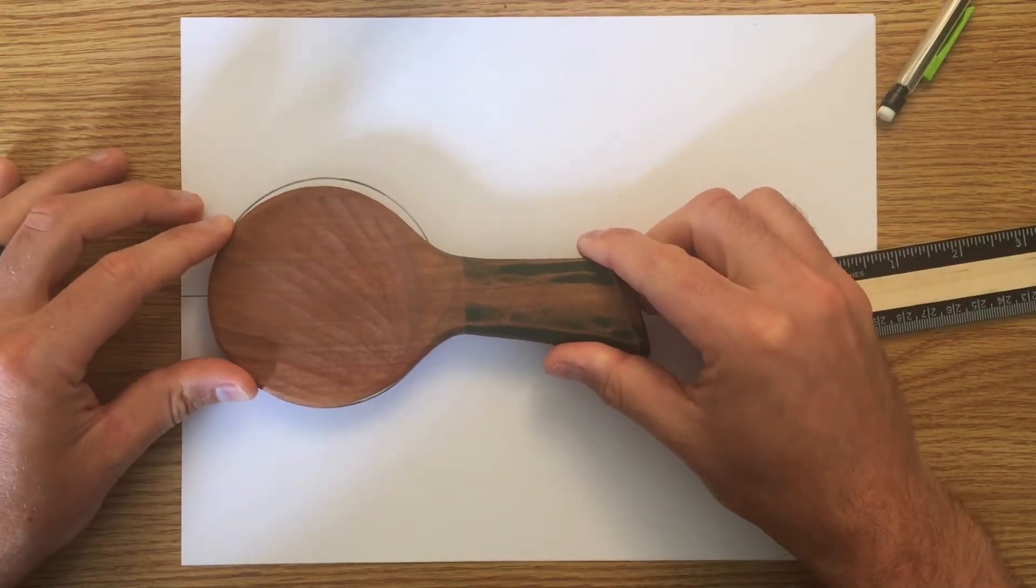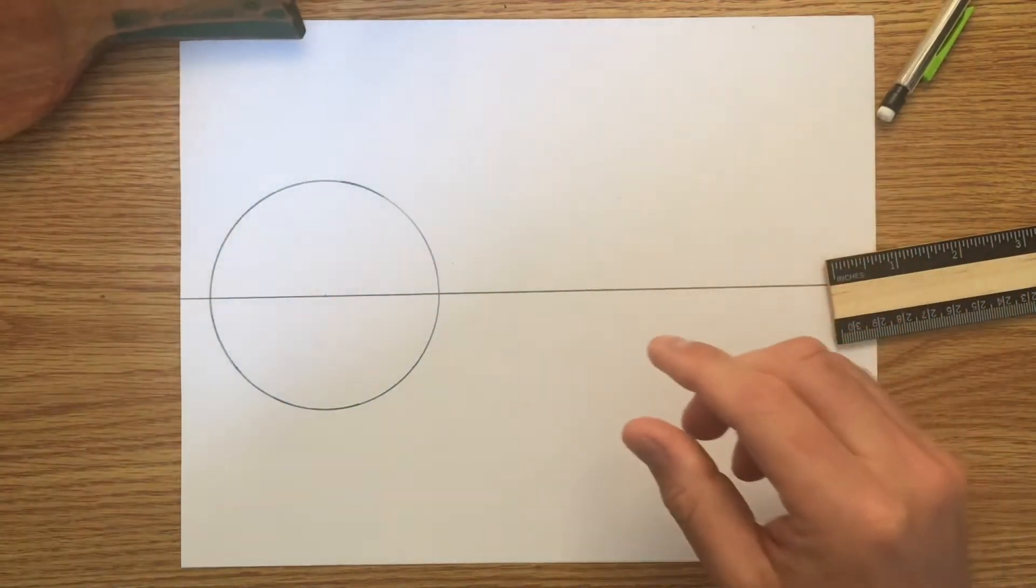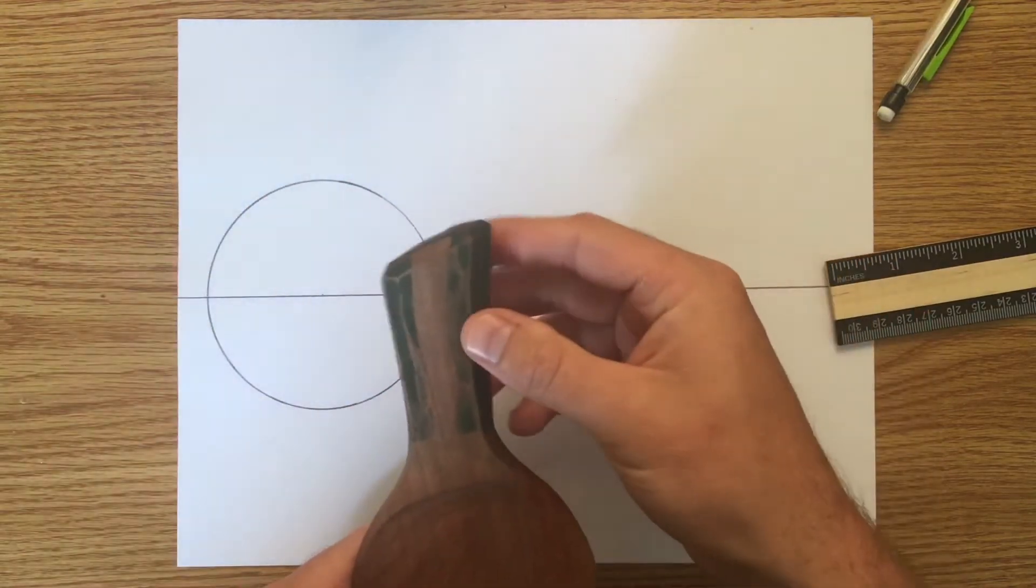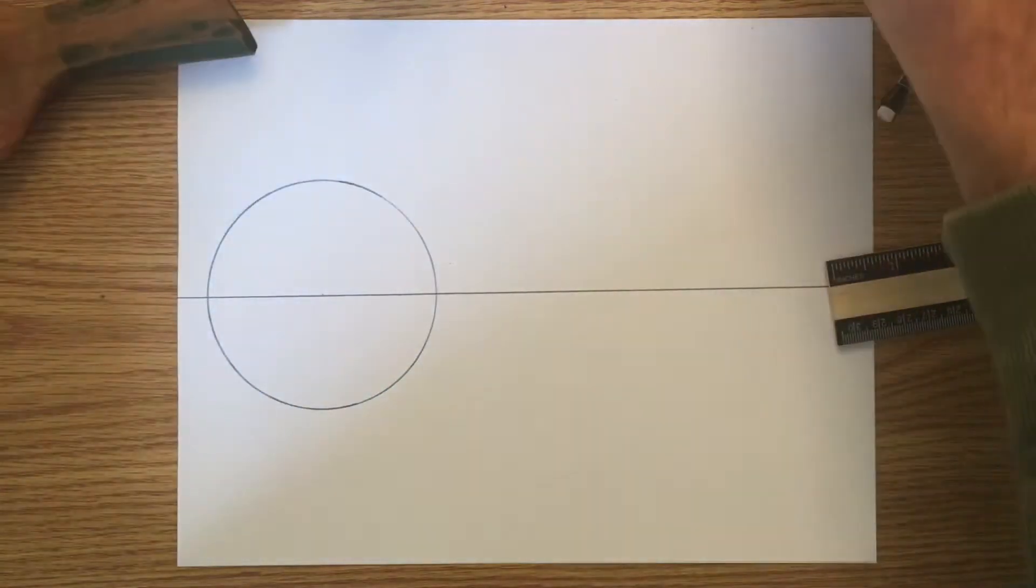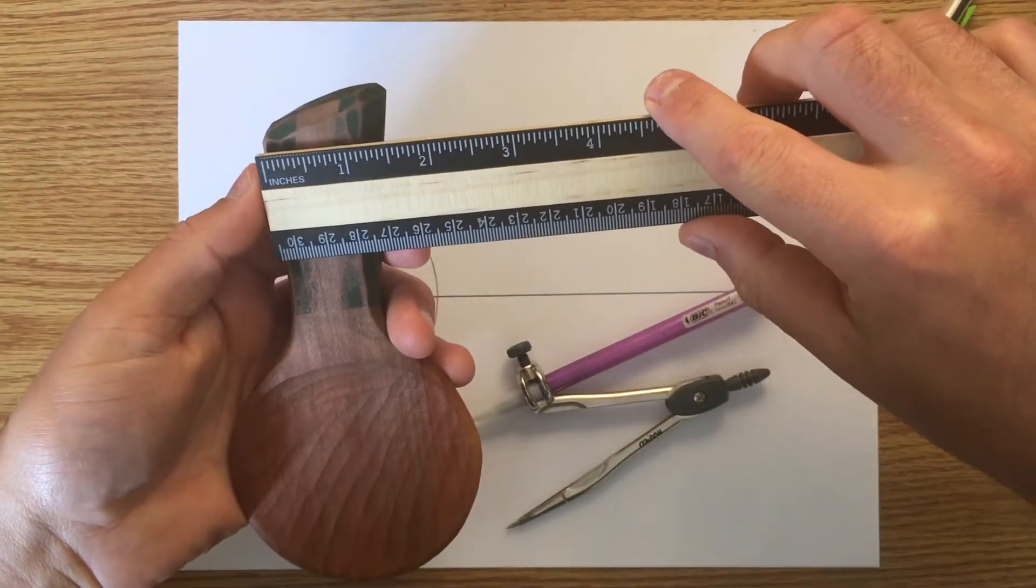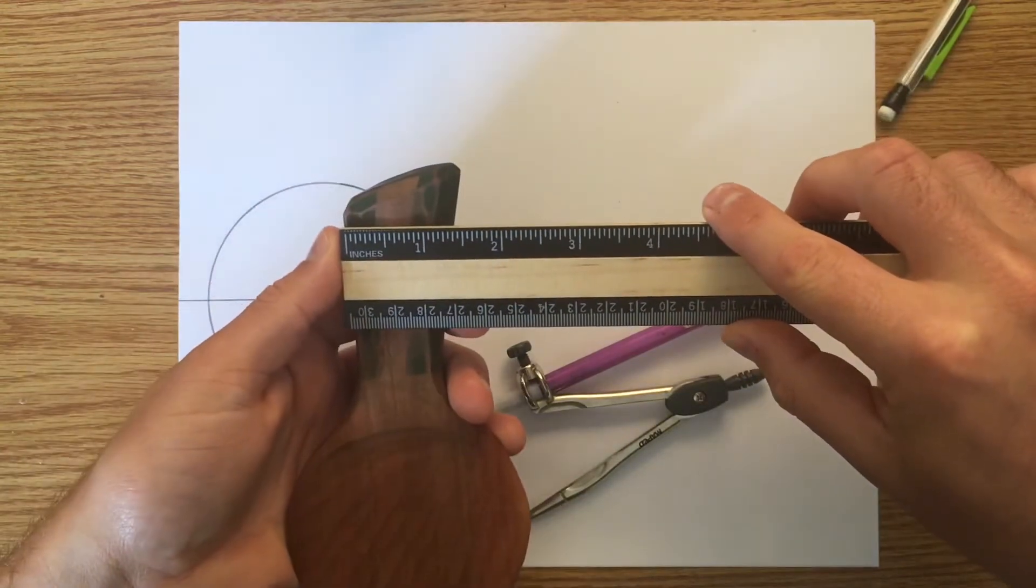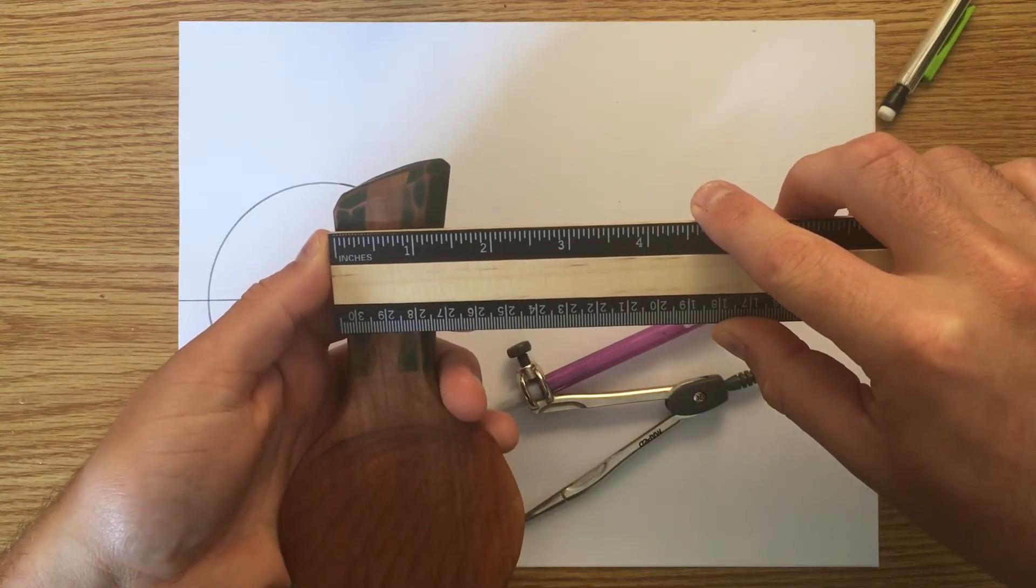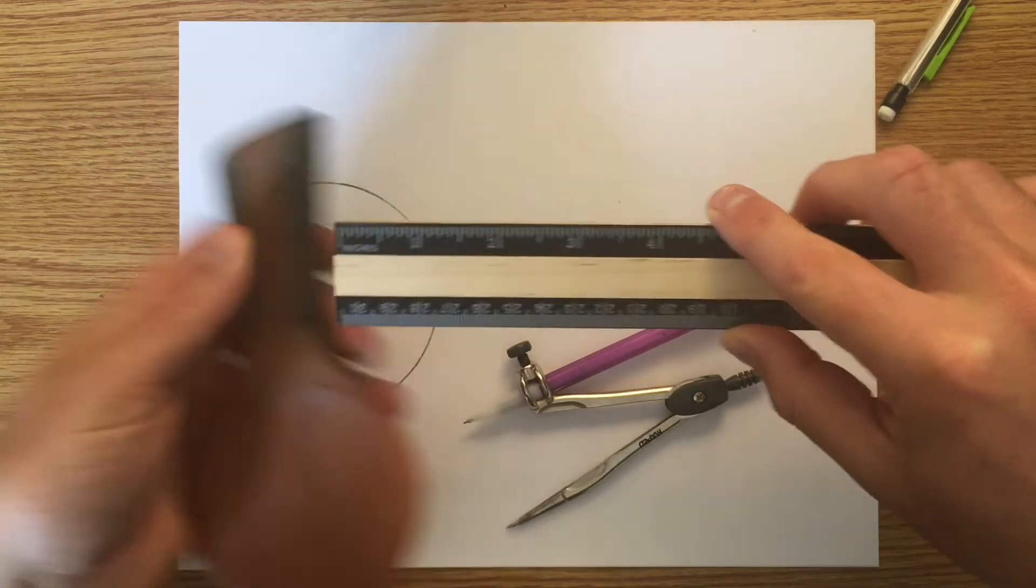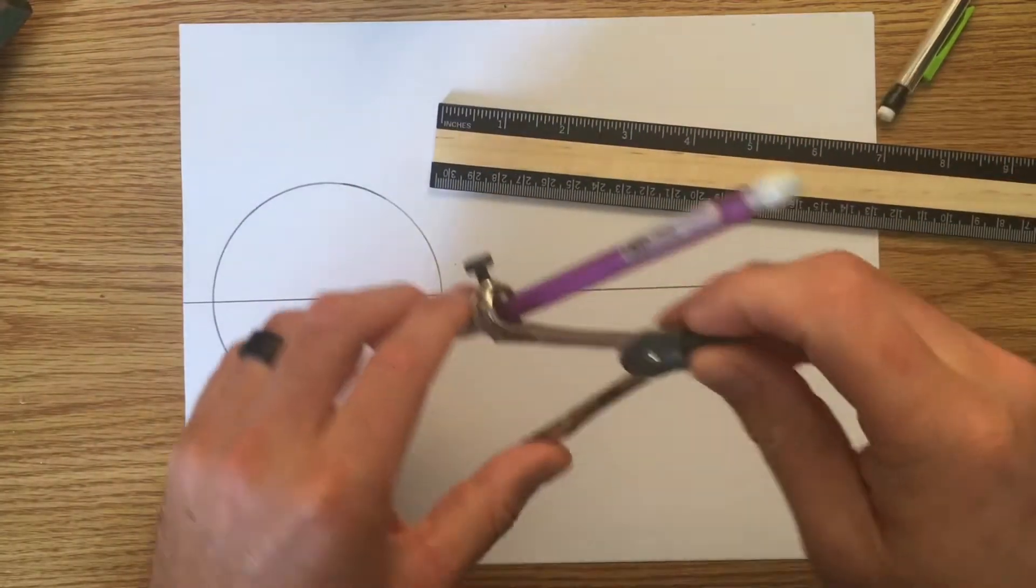Now the next part is this handle, which kind of has like an asymmetrical flare to it. So what I'm going to do, once again, I'm going to just say okay, roughly at the symmetrical part it's about almost one and a half. So I'm going to go almost three quarters.